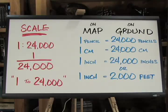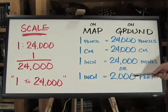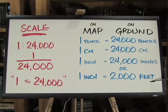Sometimes it's useful to convert the ground units to something else. For example, we know that there are 12 inches in a foot. If we divide this by 12, we see that one inch on the map equals 2,000 feet on the ground. That's a lot easier to deal with than 24,000 inches.